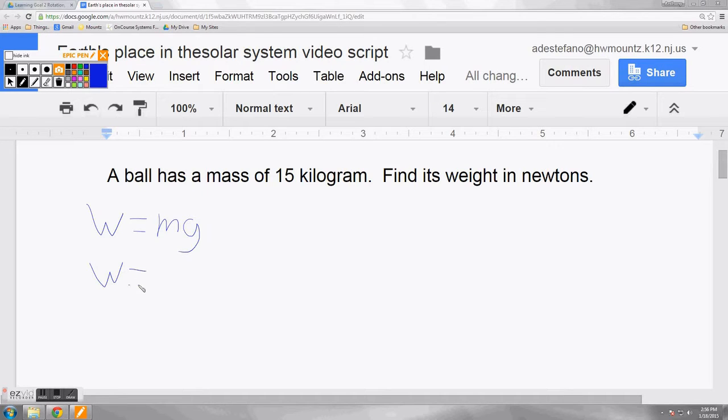In this problem, we don't know the weight, but we're given the mass, which is 15 kilograms. We also know that since this is on Earth, the gravity must be 9.8 meters per second squared.